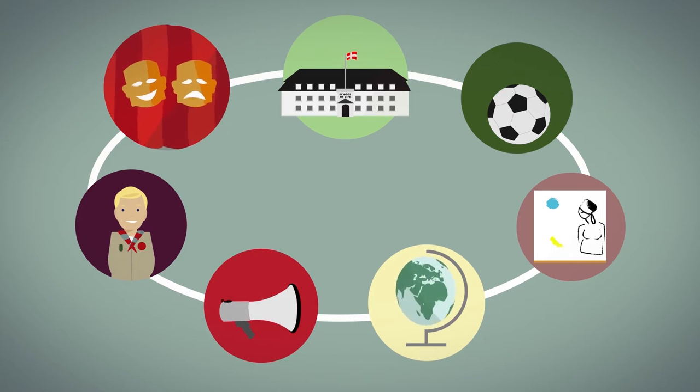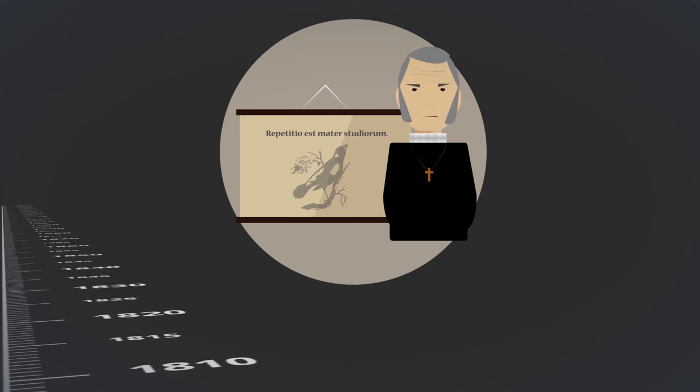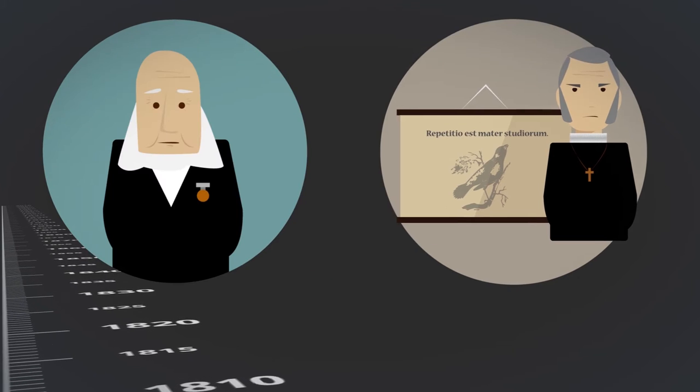The non-formal adult education of today has roots way back in the Danish and European tradition of popular Enlightenment. In the 1800s, school was strictly academic with rote learning under the discipline of the church.